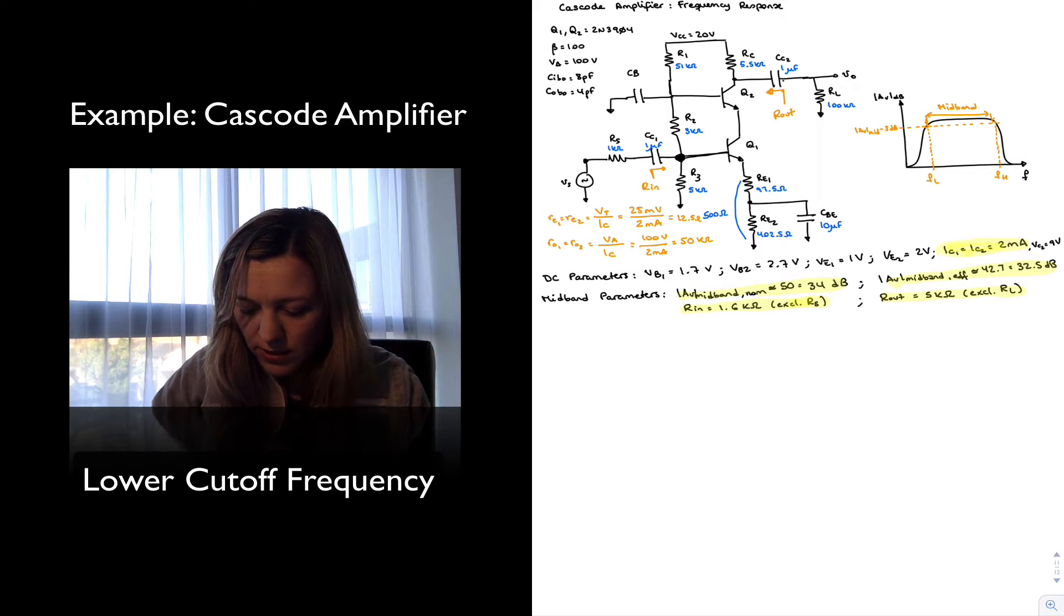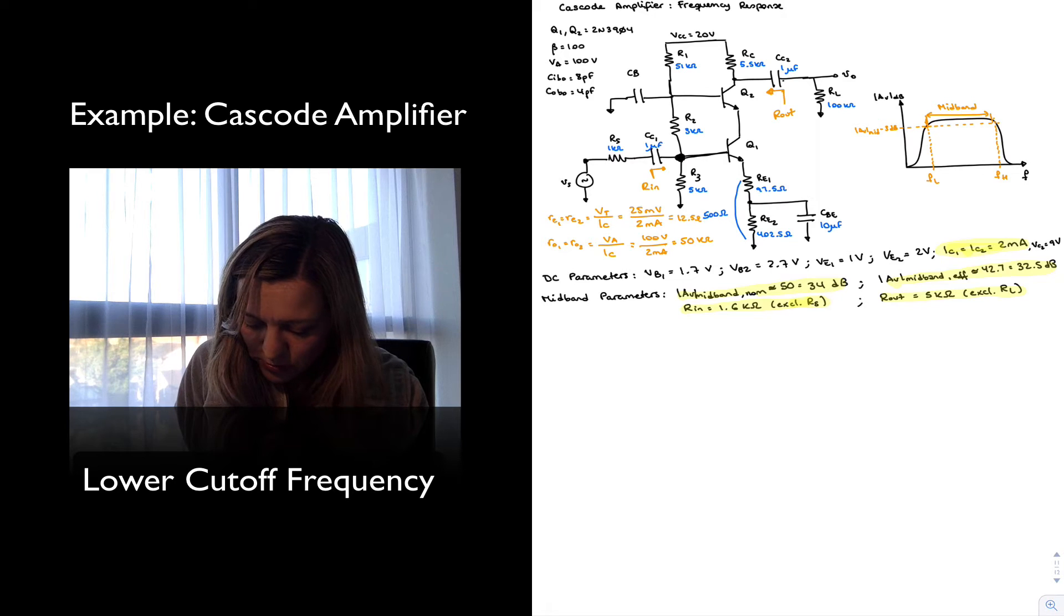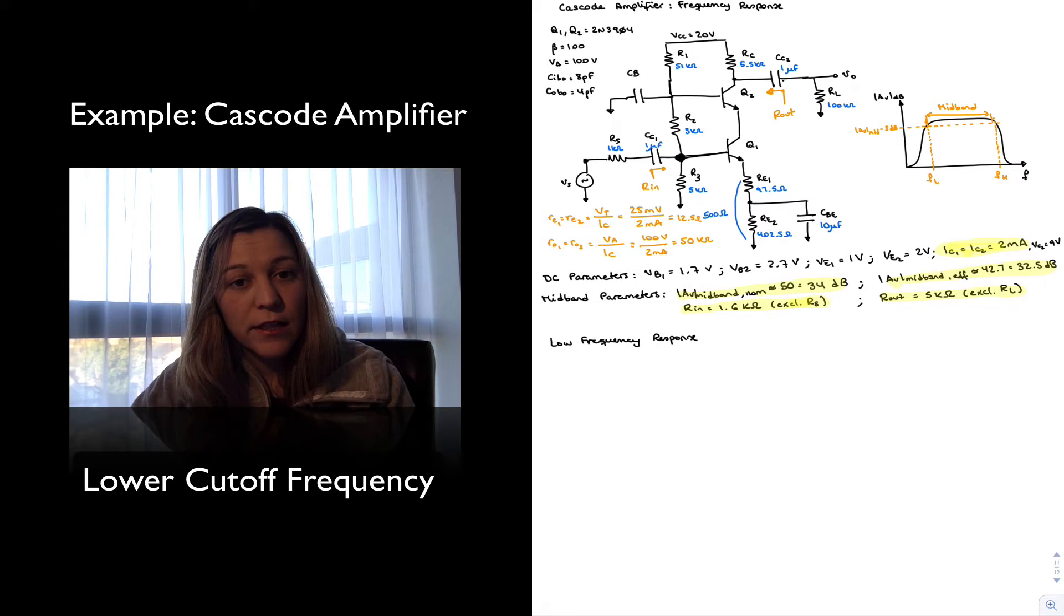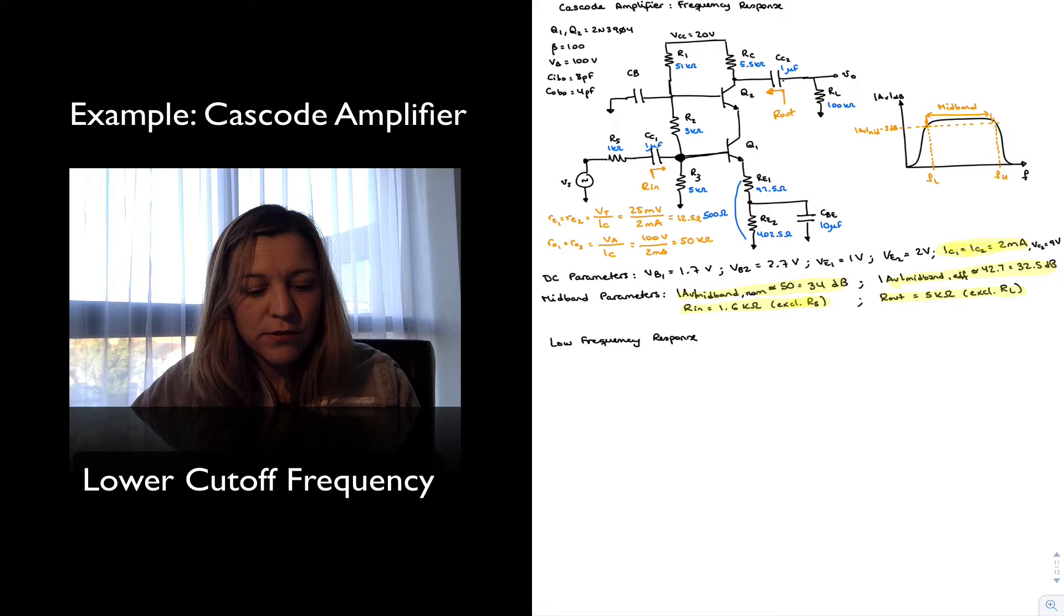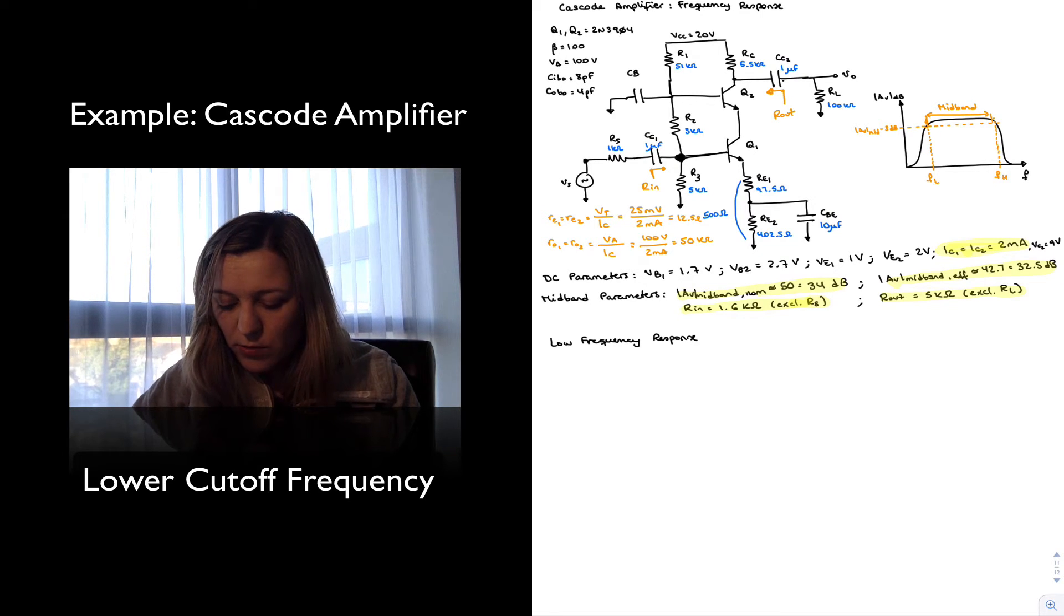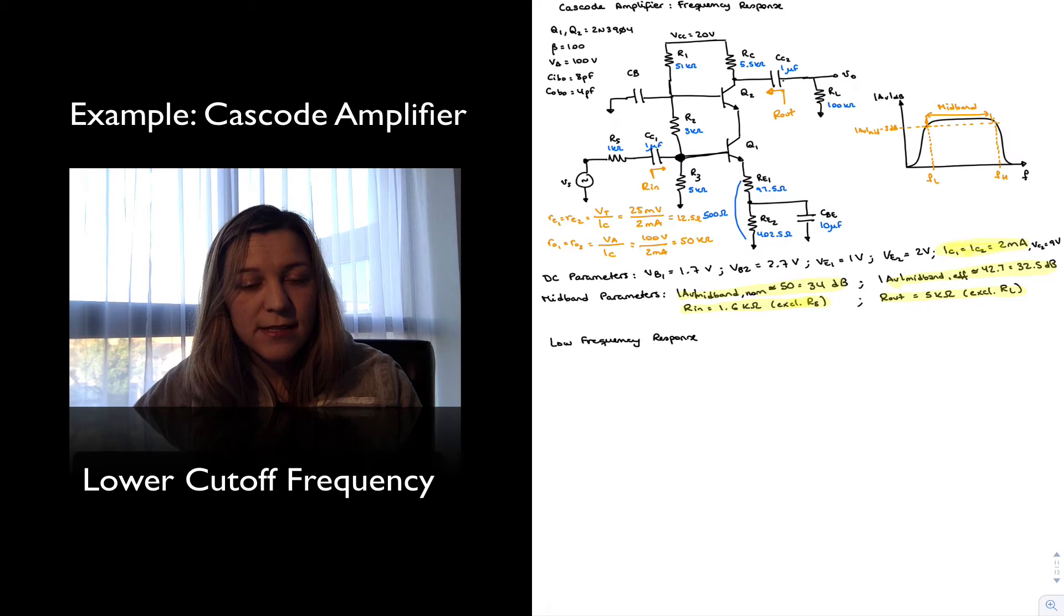Alright, let's go ahead and start looking at the lower frequencies. So low frequency response. Our goal here again is to calculate the value of FL, the low corner frequency or the low cutoff frequency for the amplifier. We can see that now we have four capacitors, four coupling and bypass capacitors, as opposed to three.